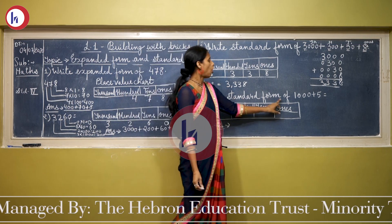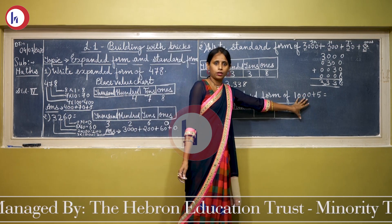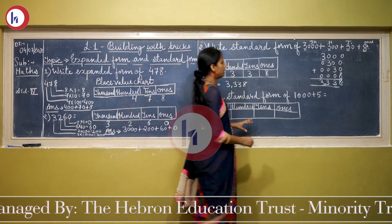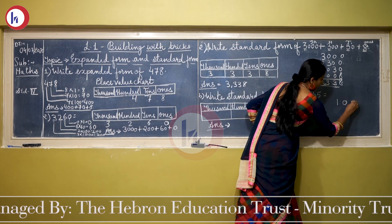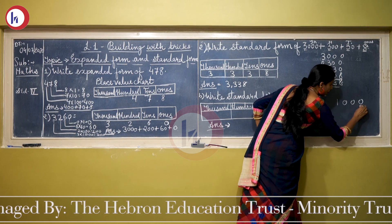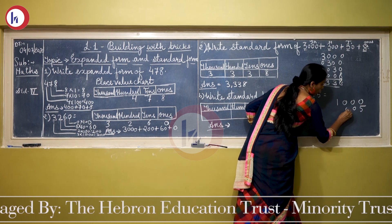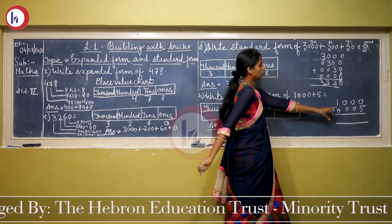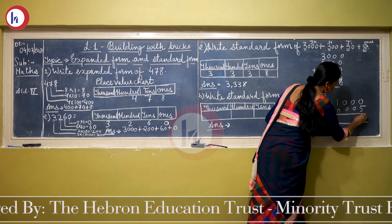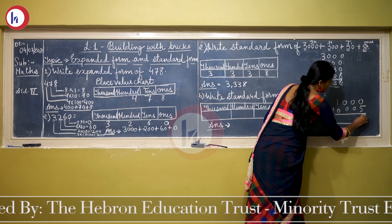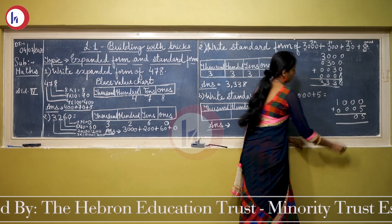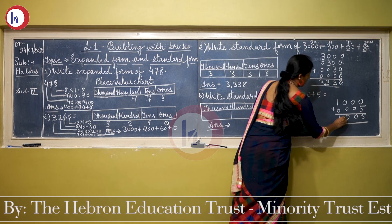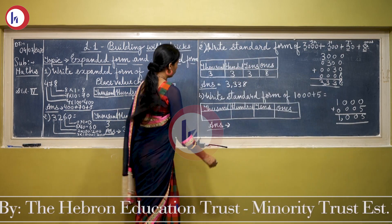Now let's solve the next example: write the standard form of 1000 + 5. We will use both methods. First method by addition: 1000 plus 5. Starting from the ones column: 0 + 5 = 5. Tens: 0 + 0 = 0. Hundreds: 0 + 0 = 0. Thousands: 1 + 0 = 1. So the answer is 1005.